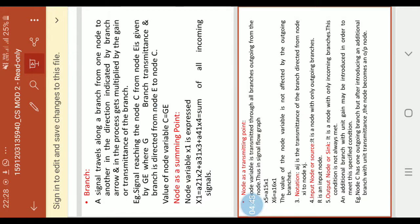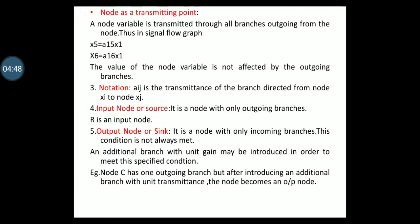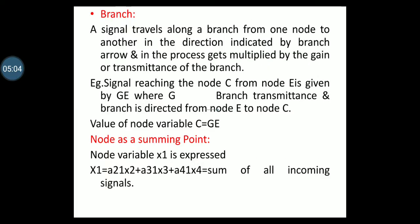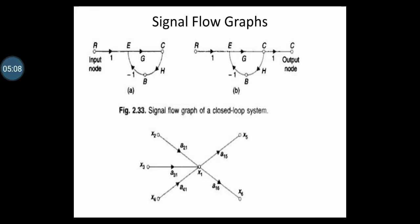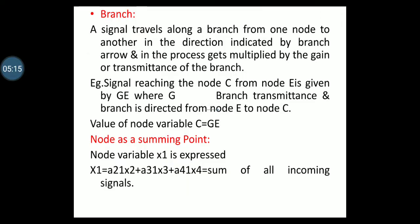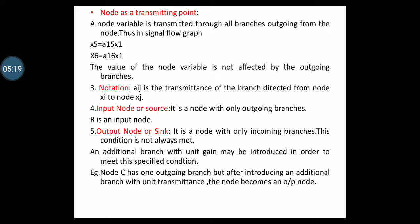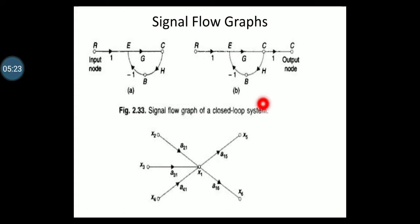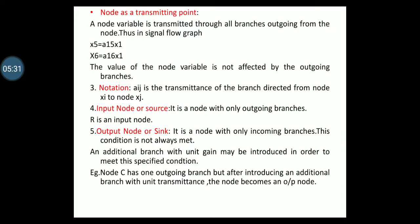Next, node as a transmitting point. A node variable is transmitted through all branches outgoing from the node. When we see the signal flow graph, the outgoing nodes from X1 are X5 and X6. X5 can be written as A15·X1 plus A16·X1. These are the outgoing branches. The value of the node variable is not affected by the outgoing branches.